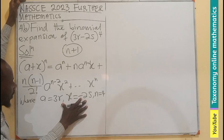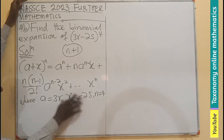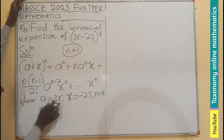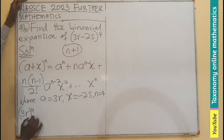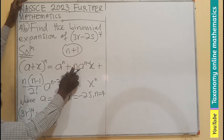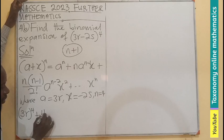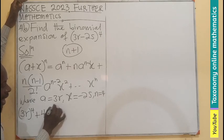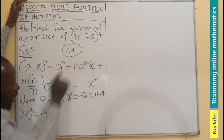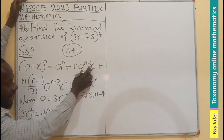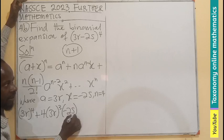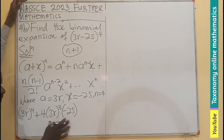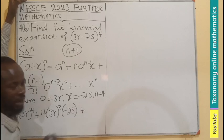The first term is A exponent N, so 3R exponent 4. Plus N which is 4, times A which is 3R exponent 3 (that is 4 minus 1), times X which is negative 2S exponent 1. That gives us the first and second terms.